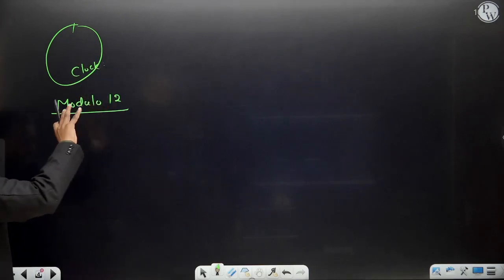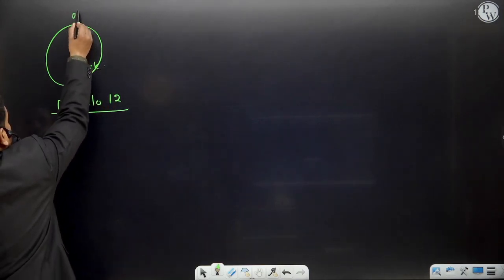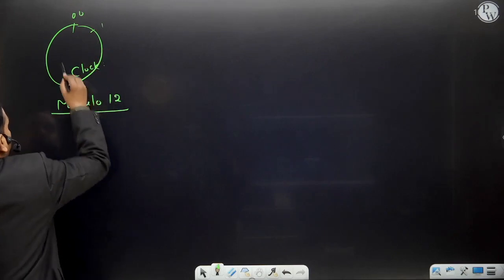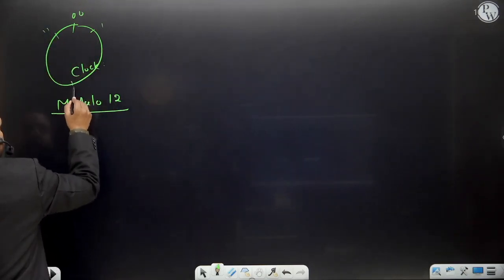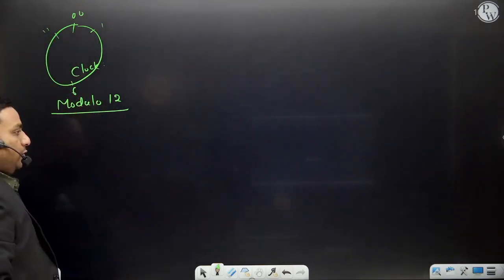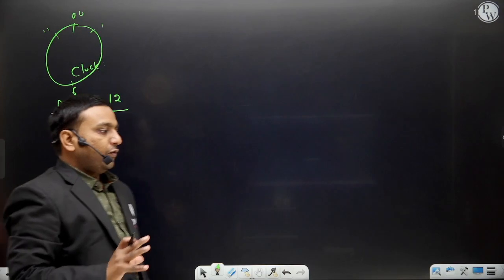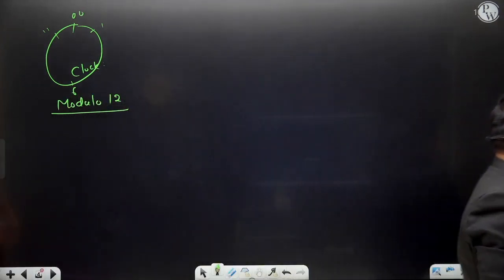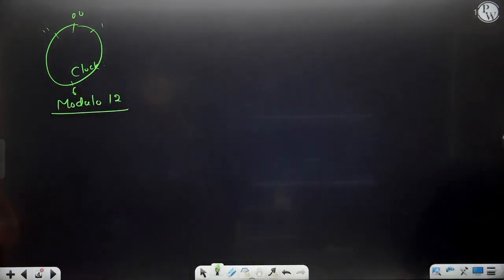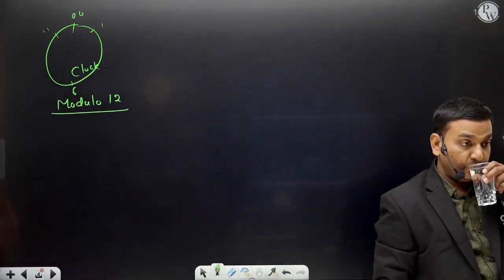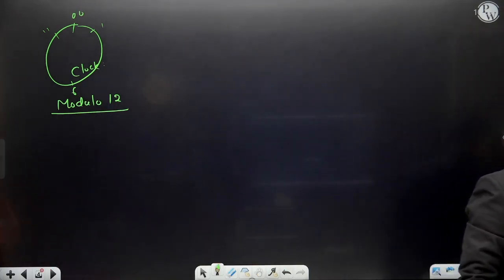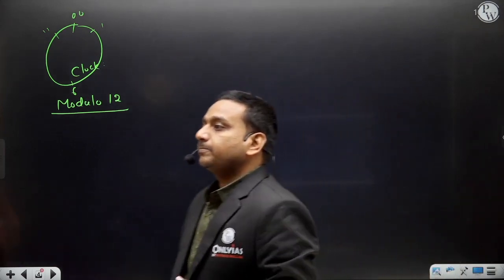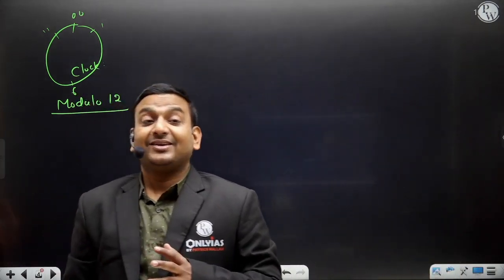Normally, the 1 to 12 clock - this is 0, this is 1, this is 11, 6, and so on. So a clock works on the modulo 12 system. Why? Why? So what is the proper definition of the modulo system?